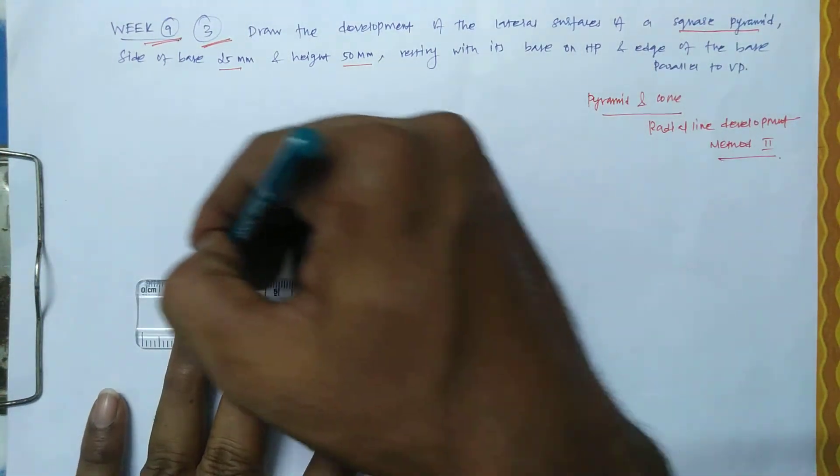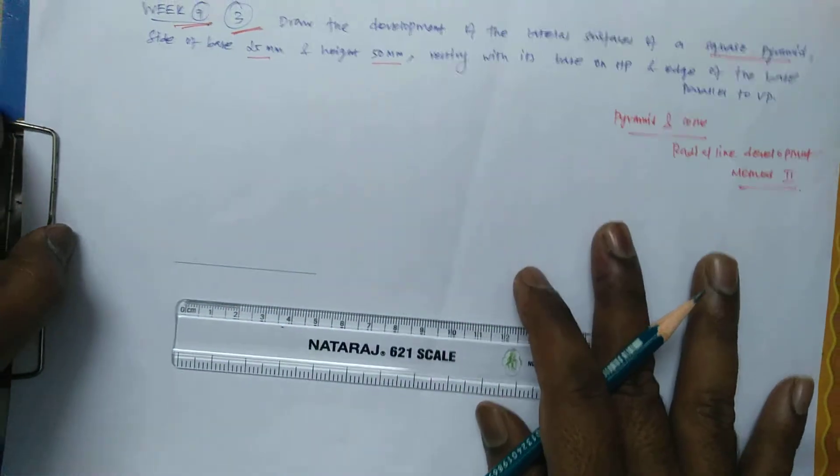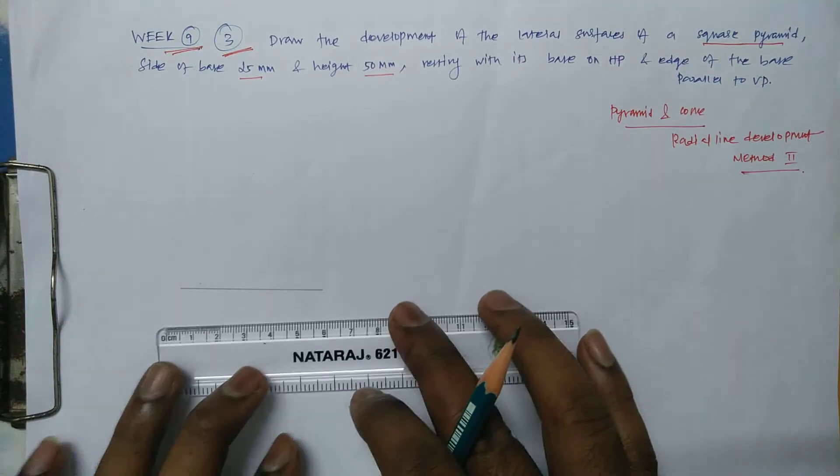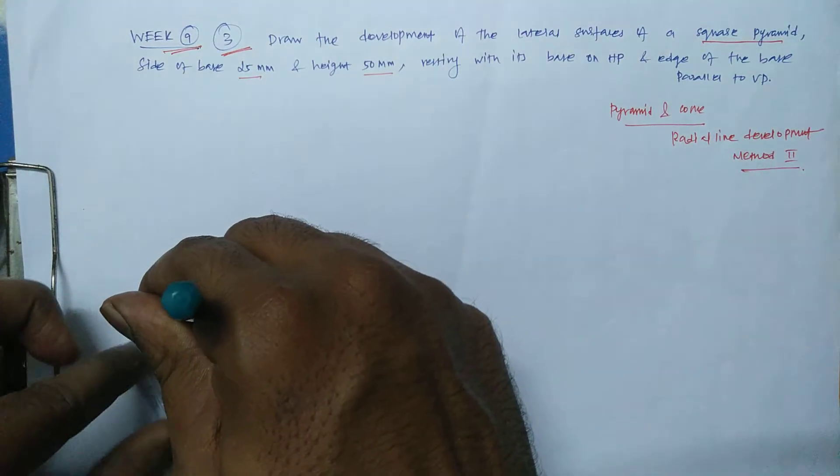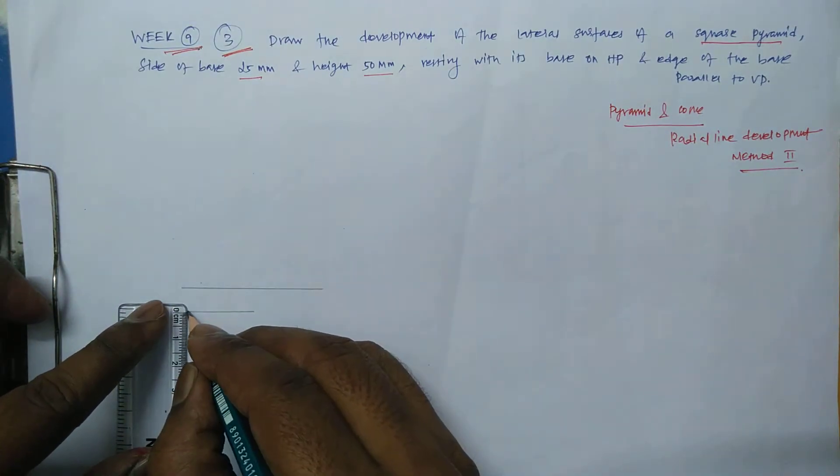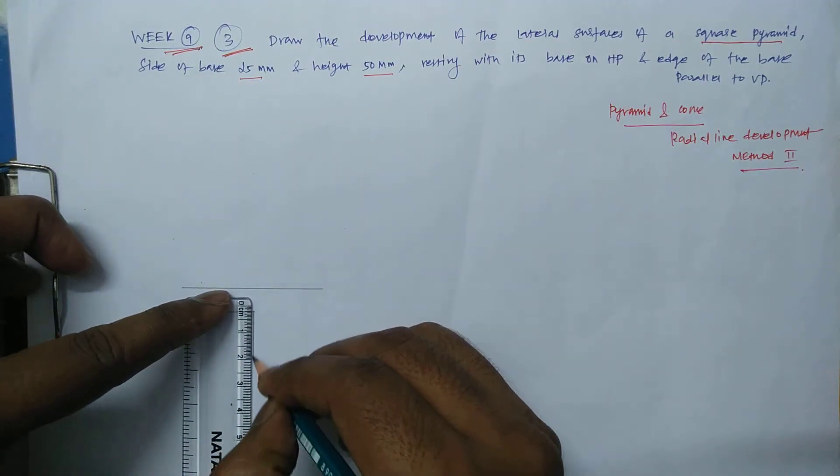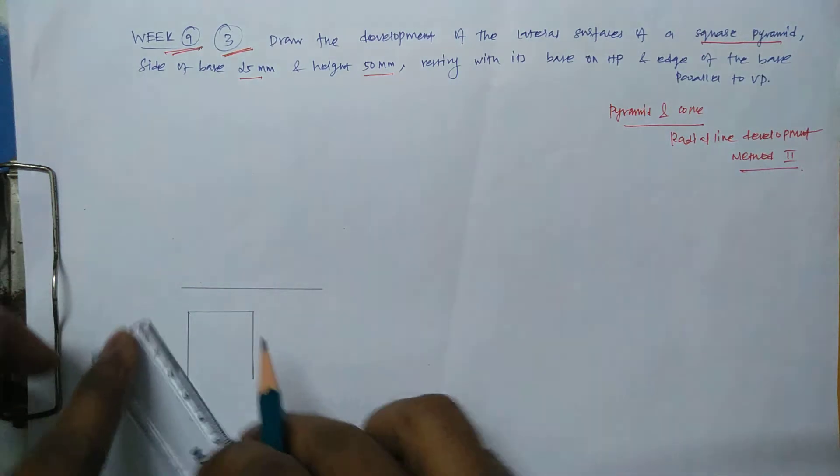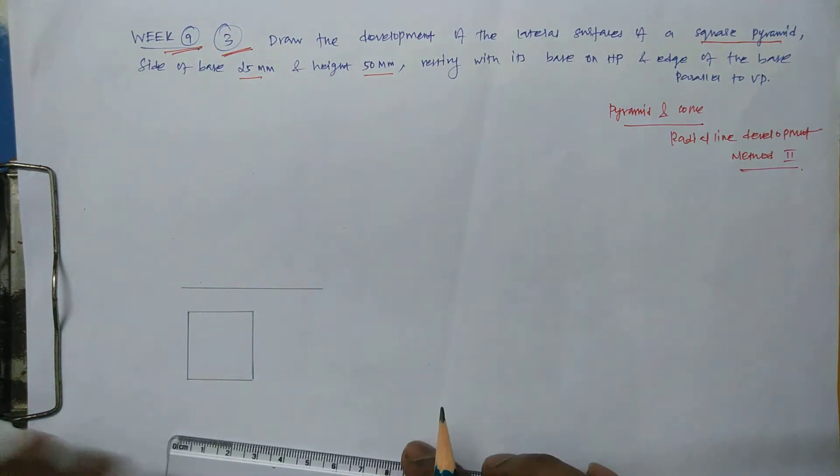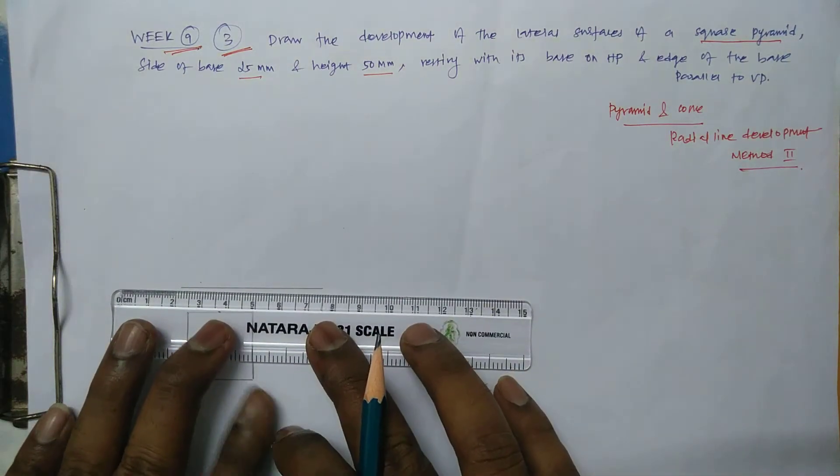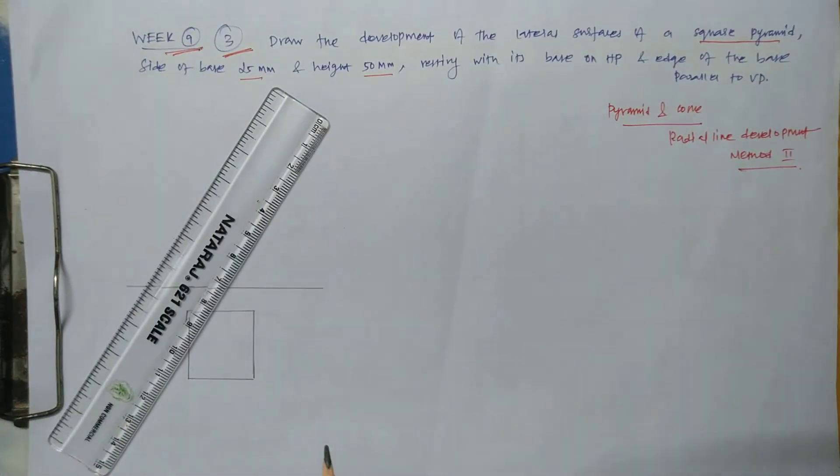So let me make one reference line, so this is 25mm, square pyramid. Let it be the 25mm square. So the center point you could connect like this.